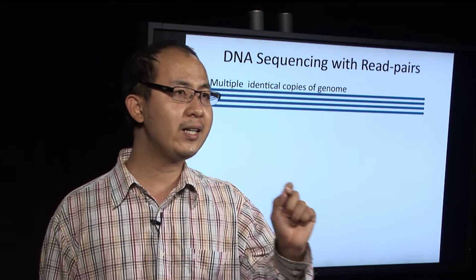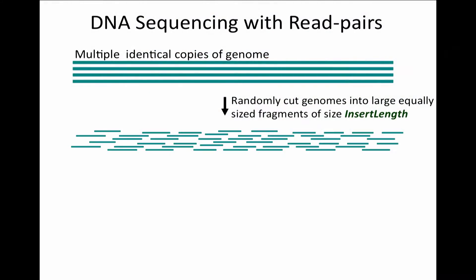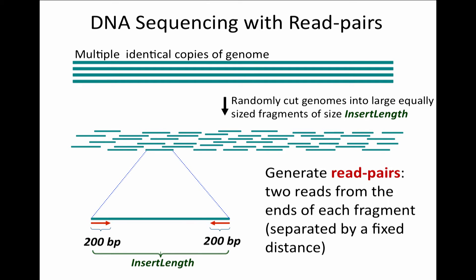Given multiple identical copies of the same genome, we now randomly cut these genomes into large equally sized fragments of size insert length. Now, for each fragment, we generate a pair of reads from both ends of each fragment.